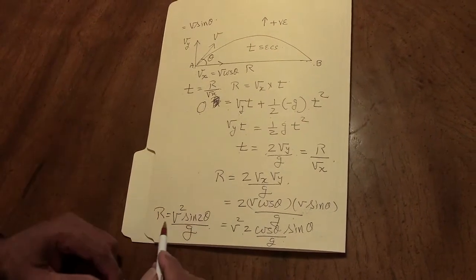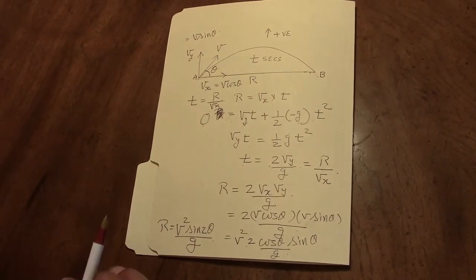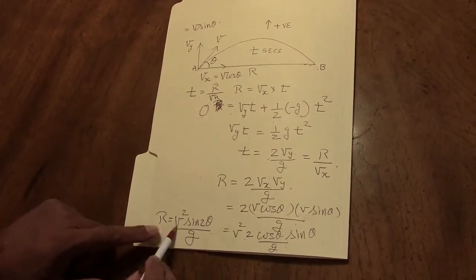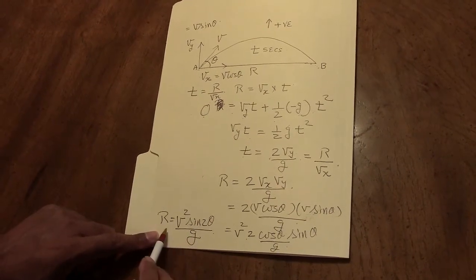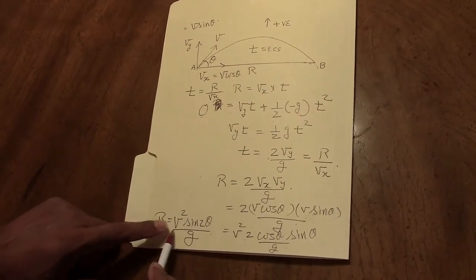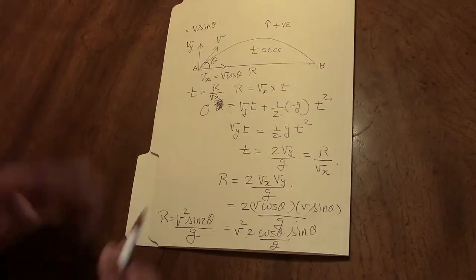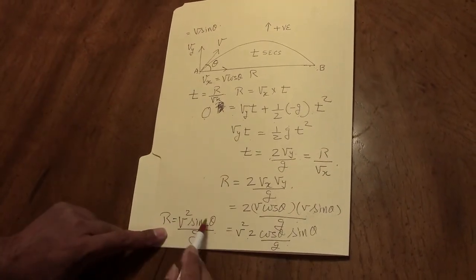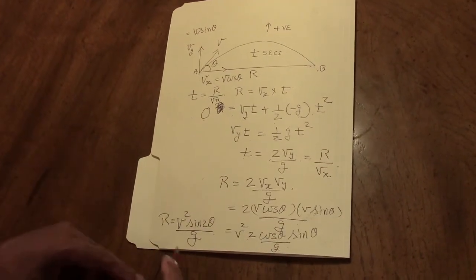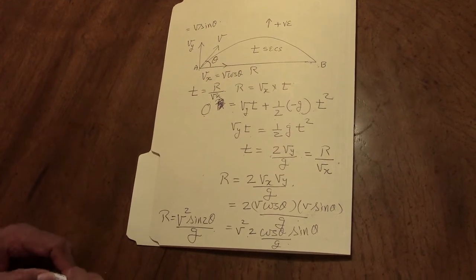So the formula for the range is V squared times sine 2 theta divided by g, where V is the velocity with which the projectile is fired, theta is the angle to the horizontal, and g is the acceleration due to gravity.